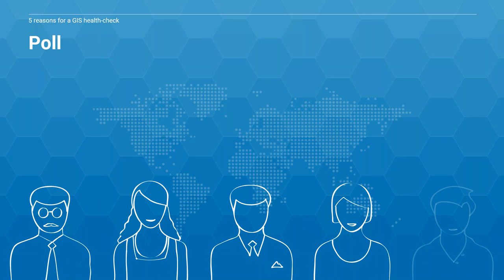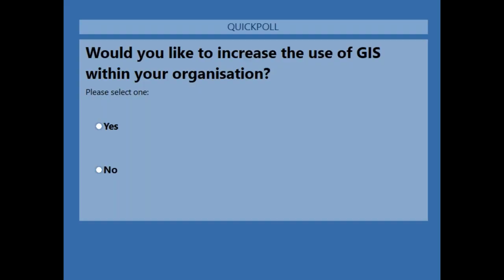We've also got a second poll question: would you like to increase the use of GIS within your organisation? Many organisations start with a project in mind, which can then lead to increasing GIS use across the organisation. But you need to make sure the infrastructure is correctly in place to start with — covering security, connections to databases, and support for your users.